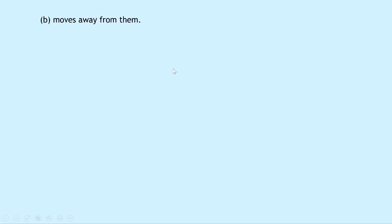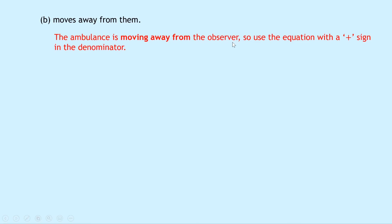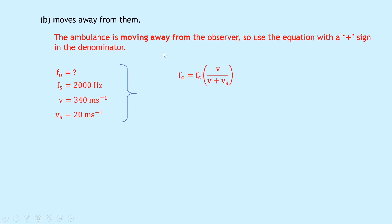In part B we find the frequency heard by the stationary observer as the police car moves away from them. Since the ambulance is moving away from the observer, we use the equation with a plus sign in the denominator — the opposite case to part A. FS is 2000 Hz, V is 340 m/s, VS is 20 m/s. So FO equals FS times V over (V plus VS), giving 2000 times 340 over (340 plus 20), which equals 1889 hertz. A quick check confirms this value is lower than the source frequency, as expected.